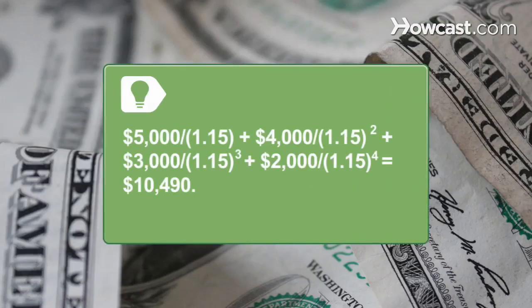If the discount rate is 15 percent and you are offered a series of cash flows over the next four years of $5,000, $4,000, $3,000, and $2,000 for an initial cost outlay of $10,000,